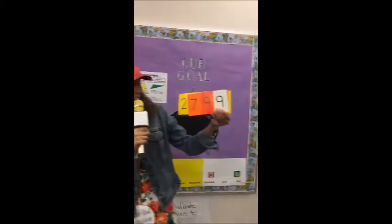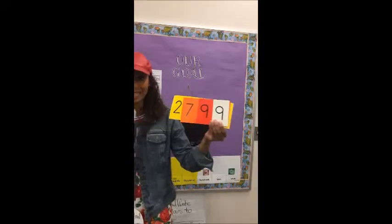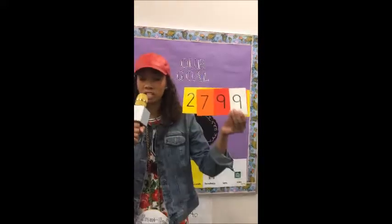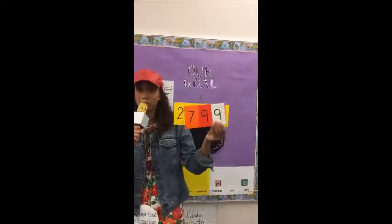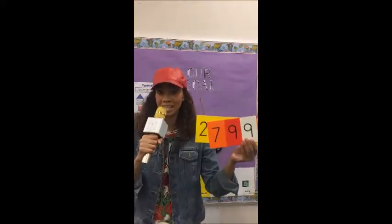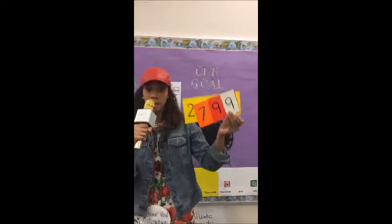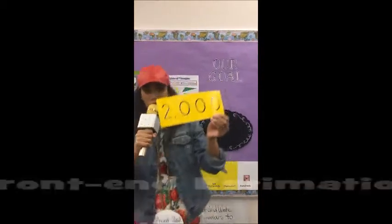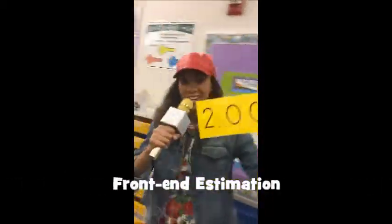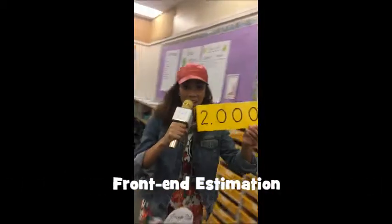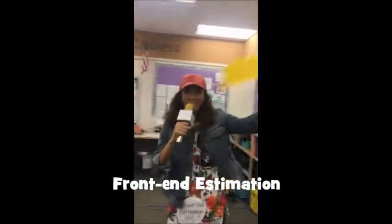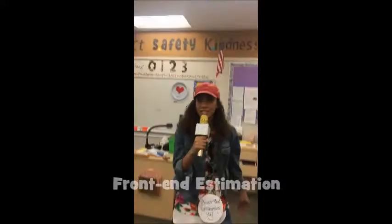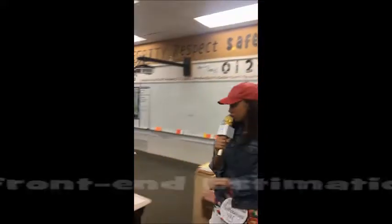This is what I do: look at the front end digit. In this case it's a two. The 2 is in the thousandths place. Now I'm gonna estimate to make it show its value.